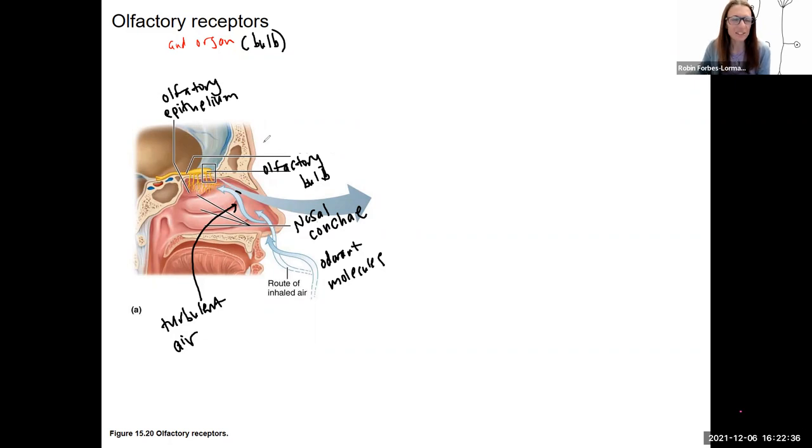The last line here is going to be our olfactory tract, which is cranial nerve number one. So we're going to zoom in to right here because this is where the action happens. This is where we're going to transduce smells into neural signals and have them be prepared to be transmitted to the brain.